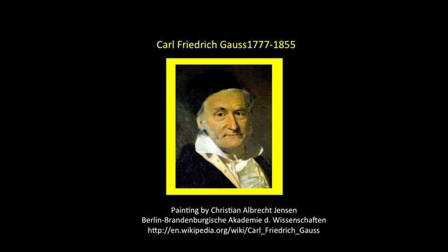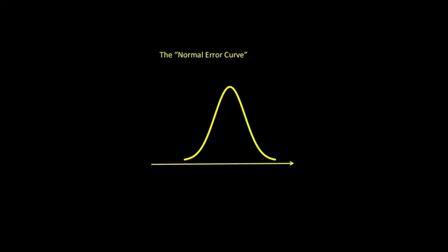The good news is that random processes follow the mathematics of probability theory, as described in the 19th century by the Princeton mathematician Karl Friedrich Gauss. We can make some generalizations about the distribution of our data, assuming that it follows a normal curve, or Gaussian distribution.